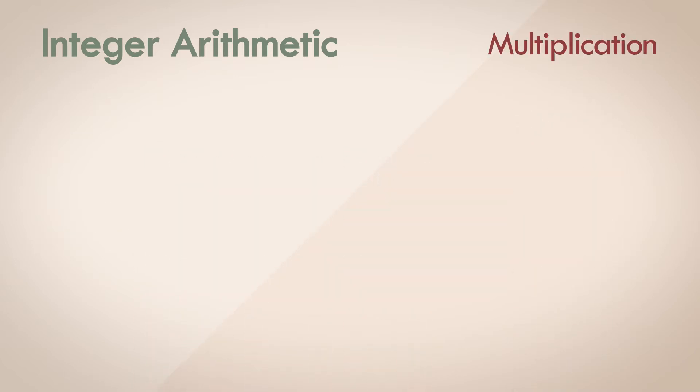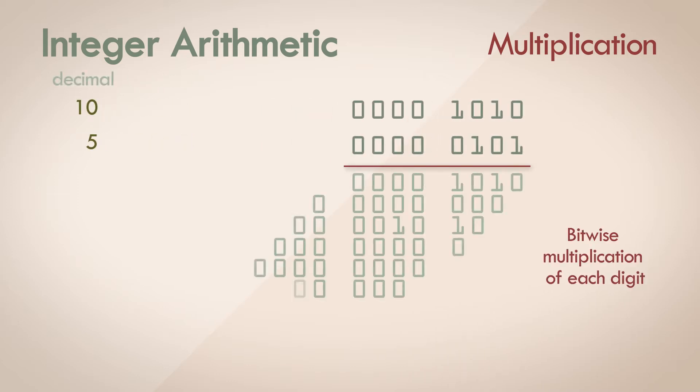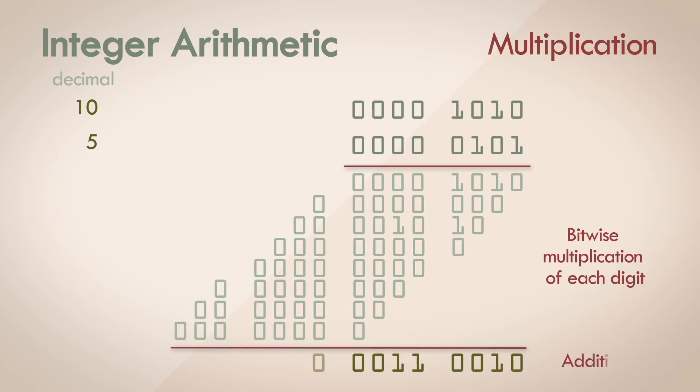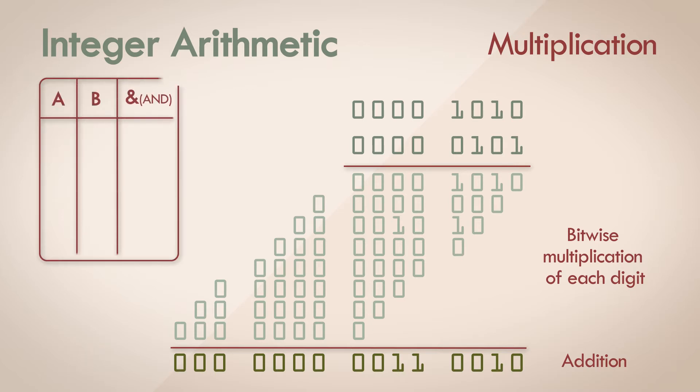Multiplication of fixed point numbers is essentially the long form multiplication method that we've been taught at school for decimal numbers. For instance, take two numbers, 10 and 5. This is their binary equivalent. Perform a multiplication step for each digit of the multiplier, and sum up all the properly shifted results. The bitwise multiplication step itself is a logical AND operation. The result is 1 only when both the multiplier and the multiplicand are 1, and it's 0 the rest of the time.